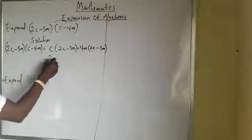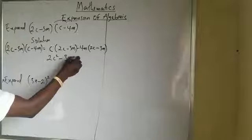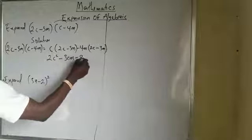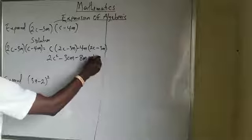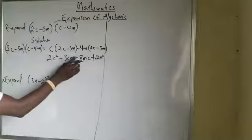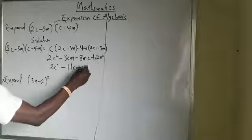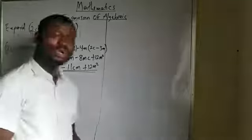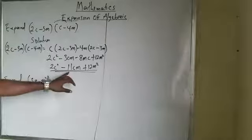Expanding (2c − 3m)(c − 4m): c × 2c = 2c², c × (−3m) = −3cm, (−4m)(2c) = −8mc, (−4m)(−3m) = +12m². Collecting like terms: 2c² − 3cm − 8mc + 12m² = 2c² − 11cm + 12m². That is the final answer — a quadratic expression, and the original brackets are called factors.